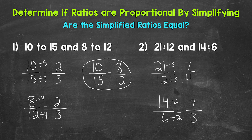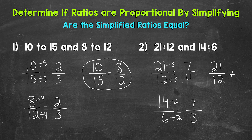So for number 2, our ratios of 21 to 12 and 14 to 6 did not simplify to the same ratio. That means that these ratios are not proportional. We can write this as 21 to 12 is not equal to, or not proportional to, 14 to 6.